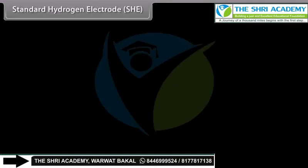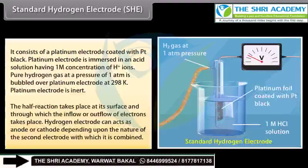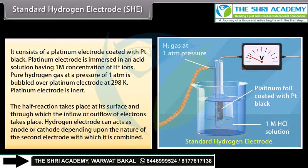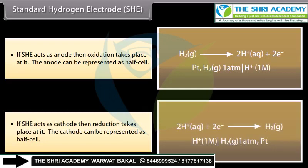Standard Hydrogen Electrode (SHE): It consists of a platinum electrode with platinum black, immersed in an acid solution having 1 M concentration of hydrogen ion. Pure hydrogen gas at a pressure of one atmosphere is bubbled over the platinum electrode at 298 K. The platinum electrode is inert; the half reaction takes place at its surface. The hydrogen electrode can act as anode or cathode depending on the nature of the second electrode. The electrode potential of the standard hydrogen electrode is taken as zero.